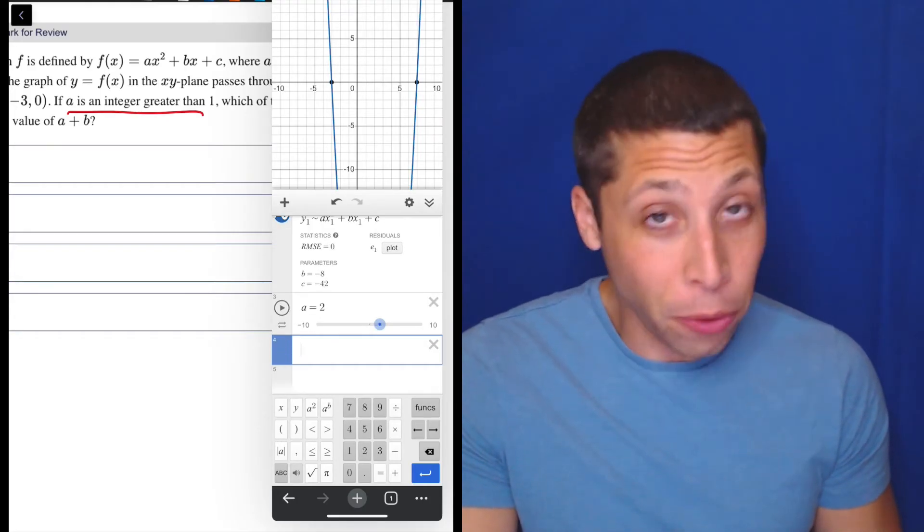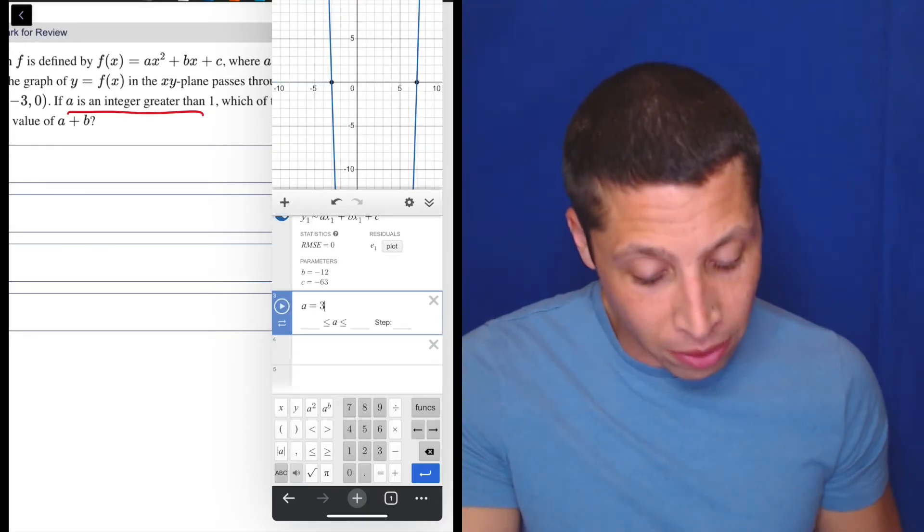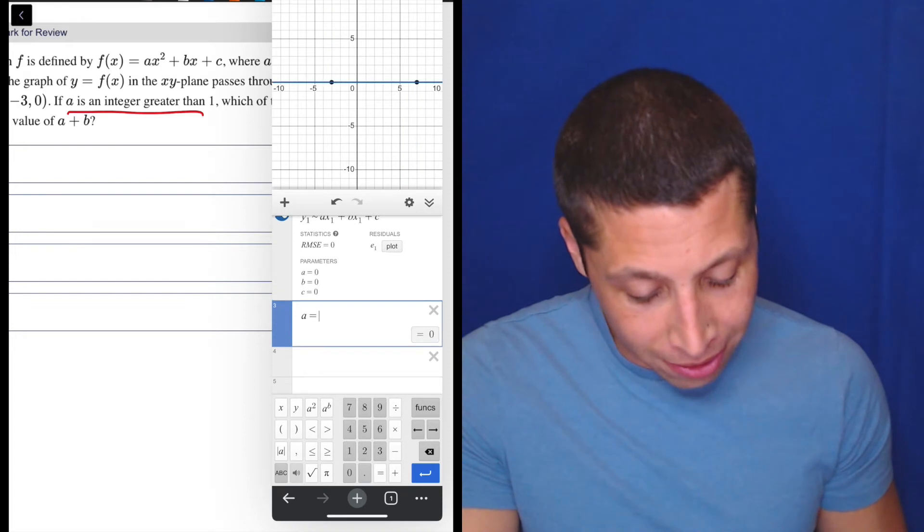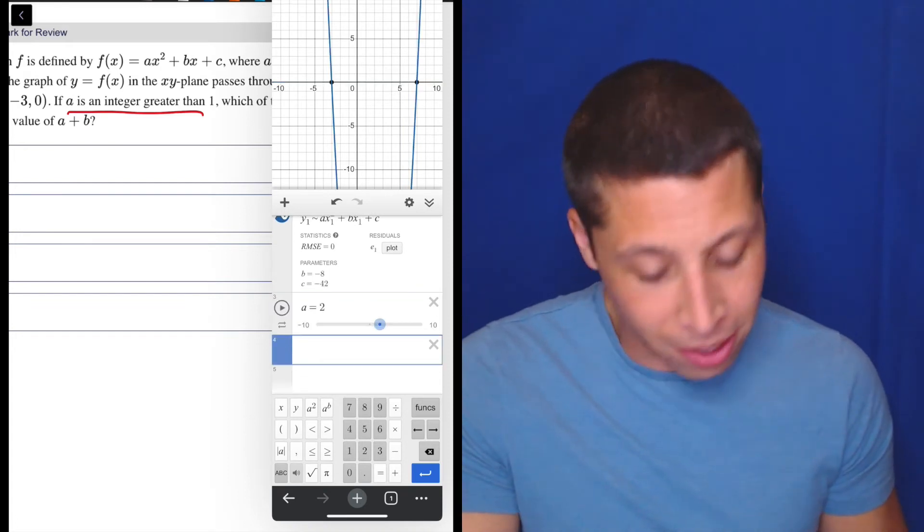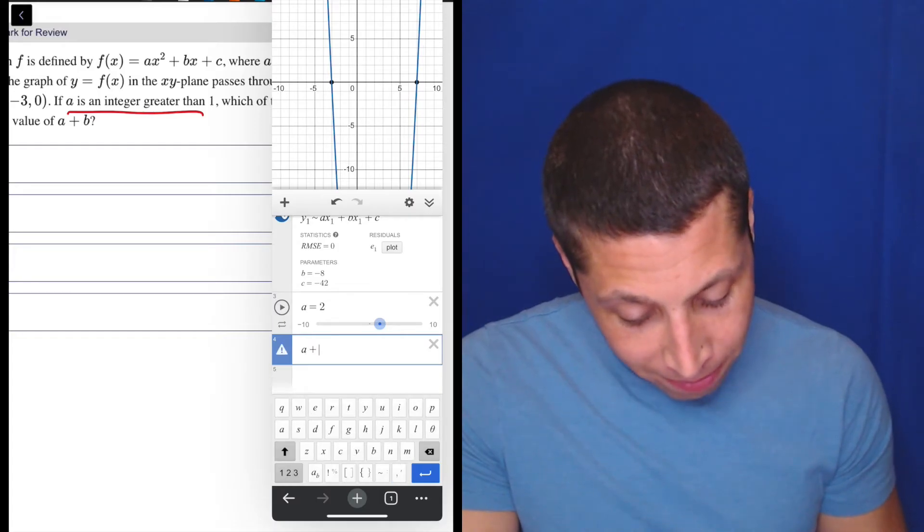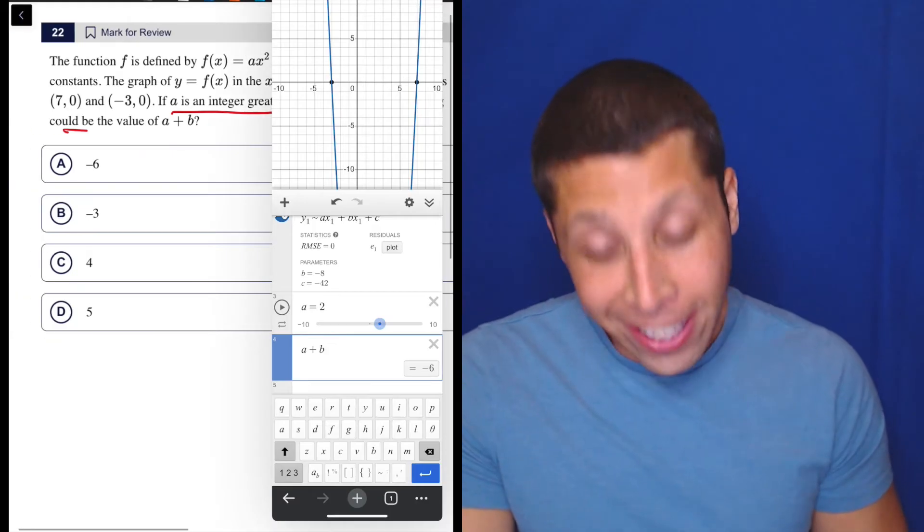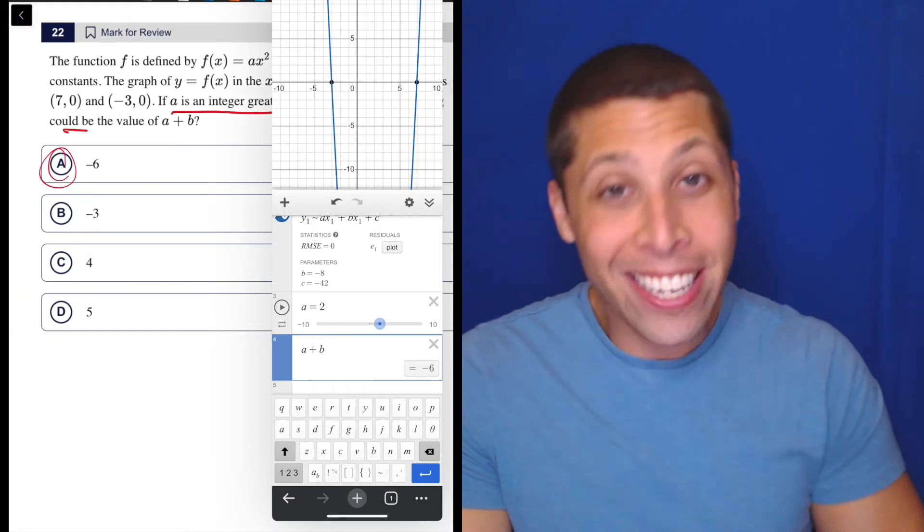And suddenly this thing turns into a parabola. And you can see that the values of B and C also are more specific now, negative eight and negative 42. So if we just, you know, it could be other things, right? We could have it as A could be three, right? And it's going to have different values for B and C, but let's keep it simple, right? Just assume the dumbest thing. And if we do A plus B, we get negative six and that's an answer. And that's the answer.